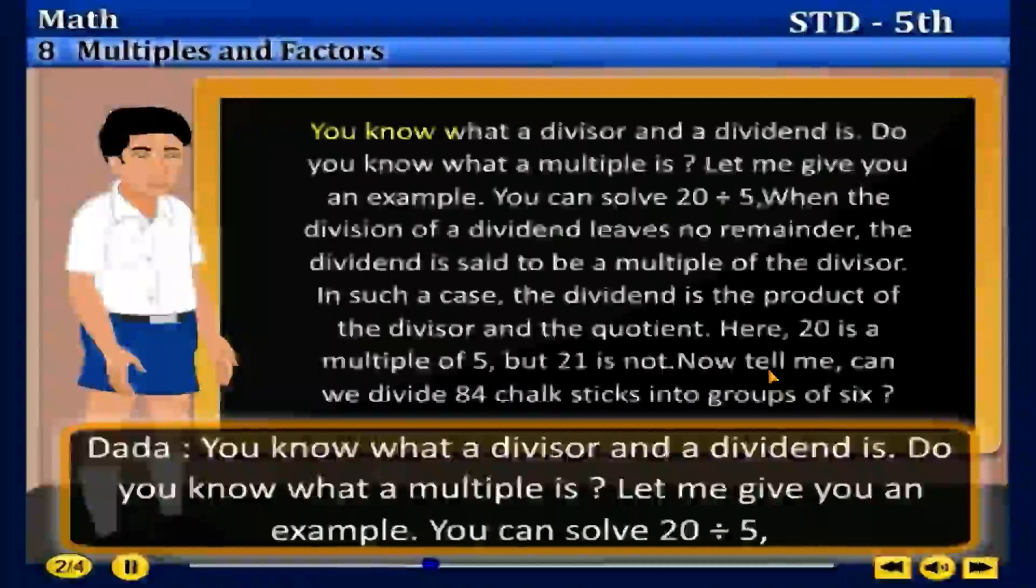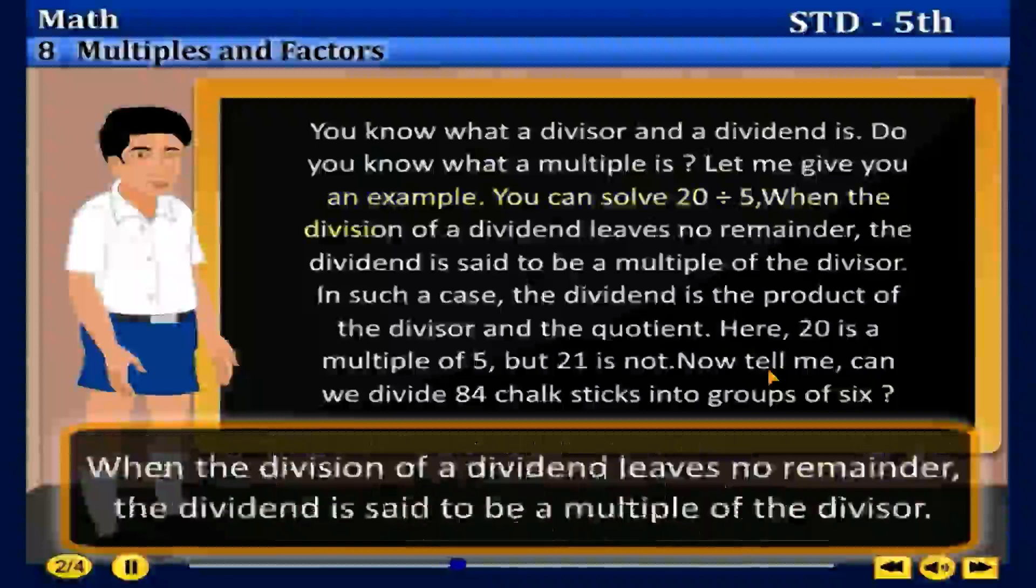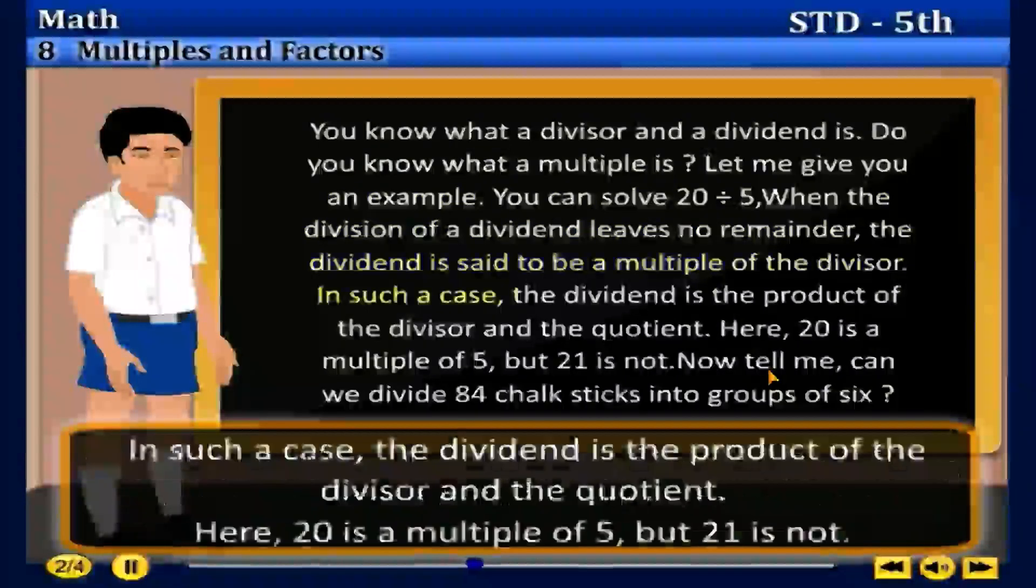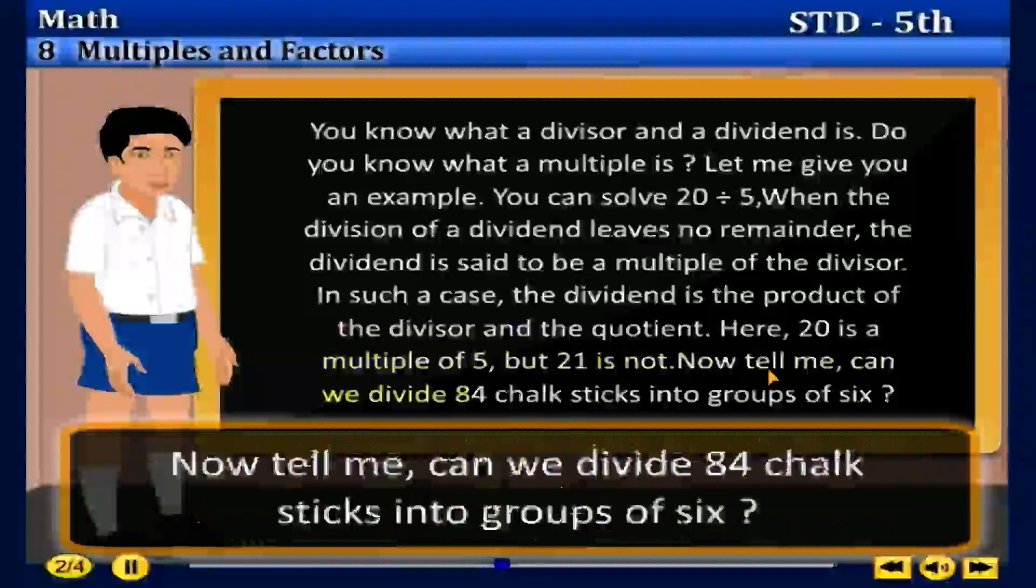Dada: You know what a divisor and a dividend is. Do you know what a multiple is? Let me give you an example. You can solve 20 divided by 5. When the division of a dividend leaves no remainder, the dividend is said to be a multiple of the divisor. In such a case, the dividend is the product of the divisor and the quotient. Here, 20 is a multiple of 5, but 21 is not. Now tell me, can we divide 84 chalk sticks into groups of 6?